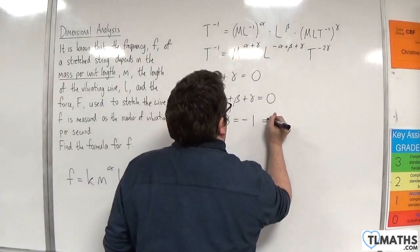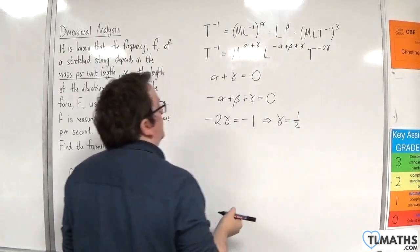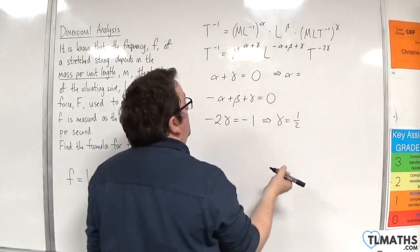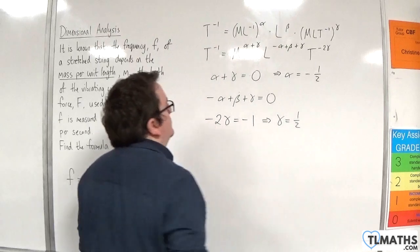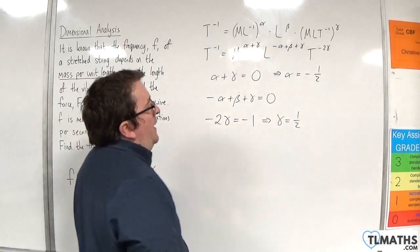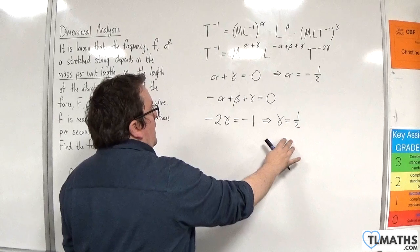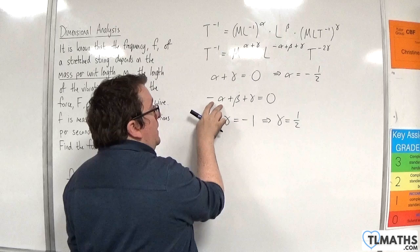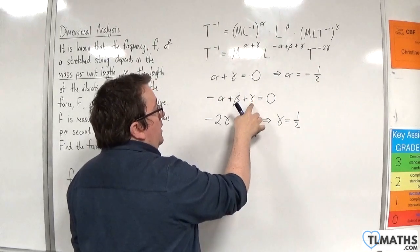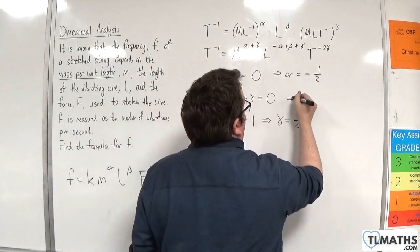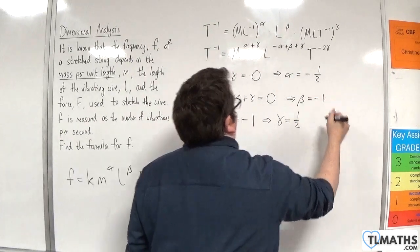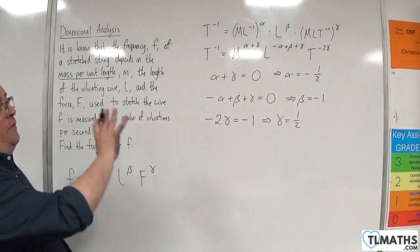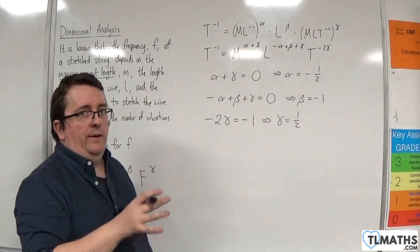Now that's telling me that gamma has to be a half. If gamma is a half, then alpha would have to be minus a half. Now if alpha is minus a half and gamma is a half, we will have minus minus a half, so one half plus a half is one, so beta would have to be minus one. Solving those three simultaneous equations. Now if they were any more horrible than that, you could always put them into your calculator to solve them.